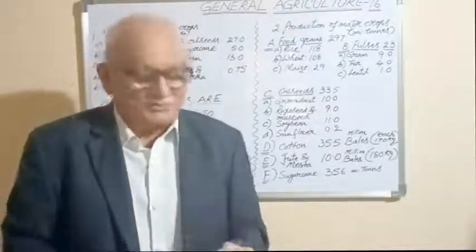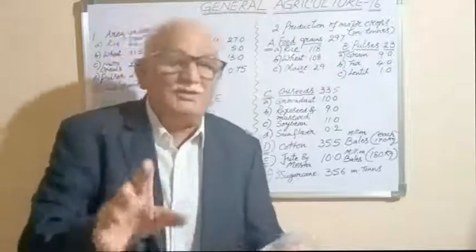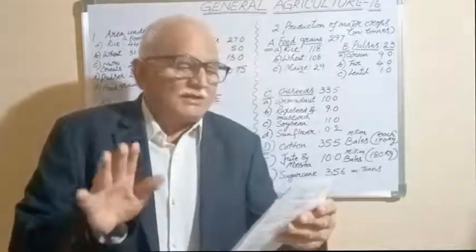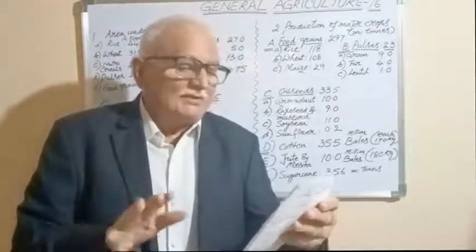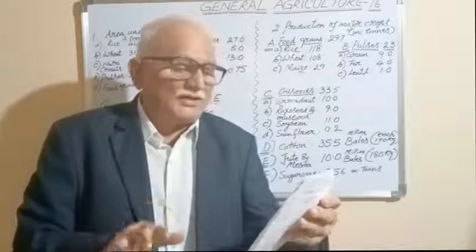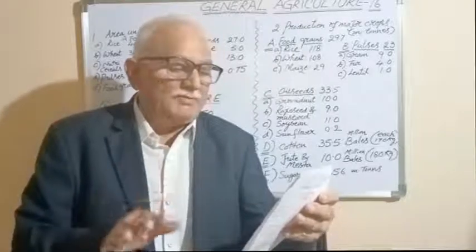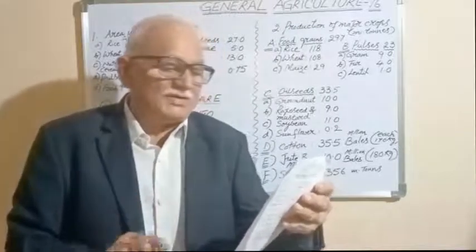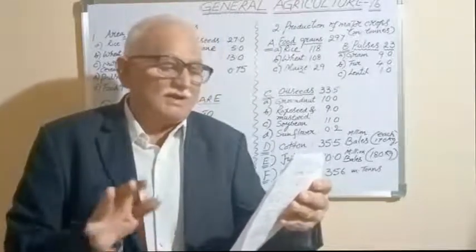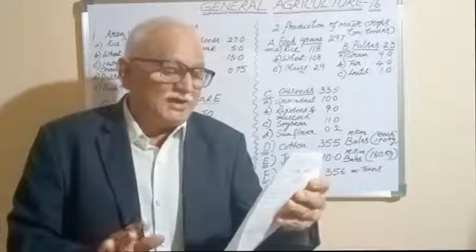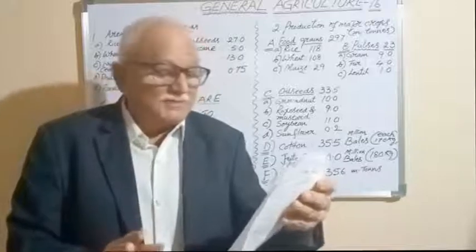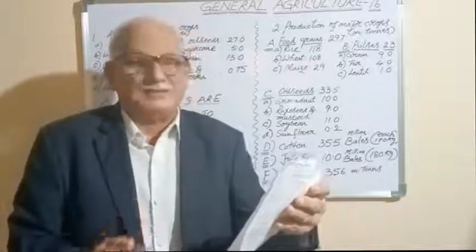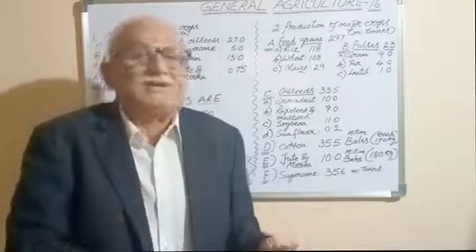For oilseeds: Rajasthan, Gujarat, Madhya Pradesh. Sugarcane: Uttar Pradesh, Madhya Pradesh, Karnataka. Cotton: Gujarat, Telangana, Maharashtra. Jute and mesta: West Bengal, Bihar, Assam. Thank you very much.